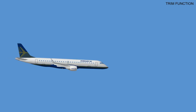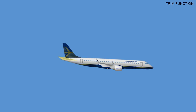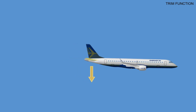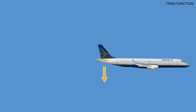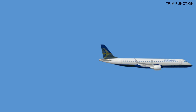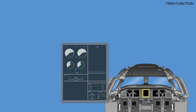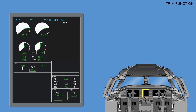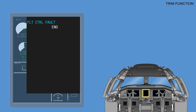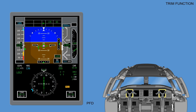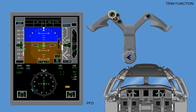The autopilot trim function positions the horizontal stabilizer surface to offload the aerodynamic force held by the elevator to maintain a particular flight condition, hence the control column force maintained by the autopilot servo. A flight controls fault CAS message is generated if the trim control function becomes inoperative. The autopilot trim function activates only when one of the autopilot channels is engaged and manual trim is not active.